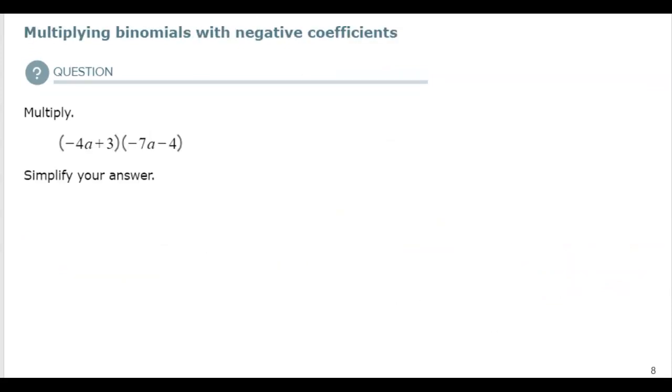Okay. Go ahead and pause your screen and try this one on your own. So, you want to decide if you do a box or distribution method. It does not matter which one. I am biased to the box method. So, I'm going to use the box.